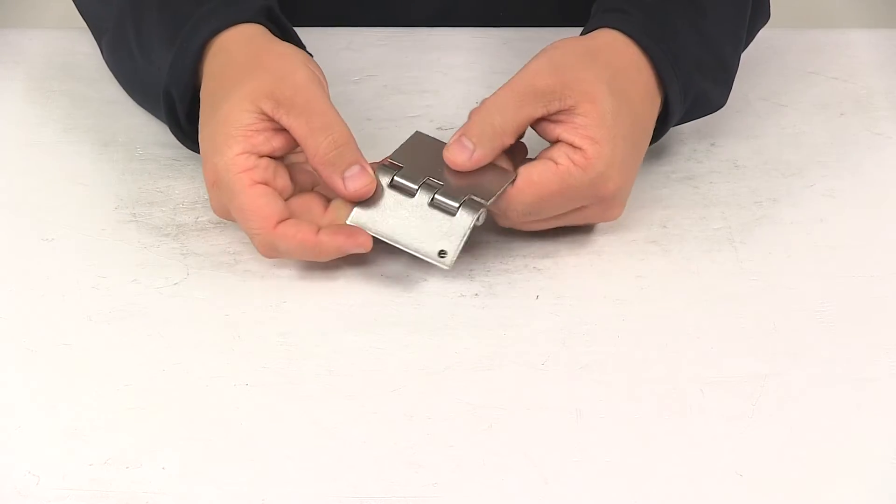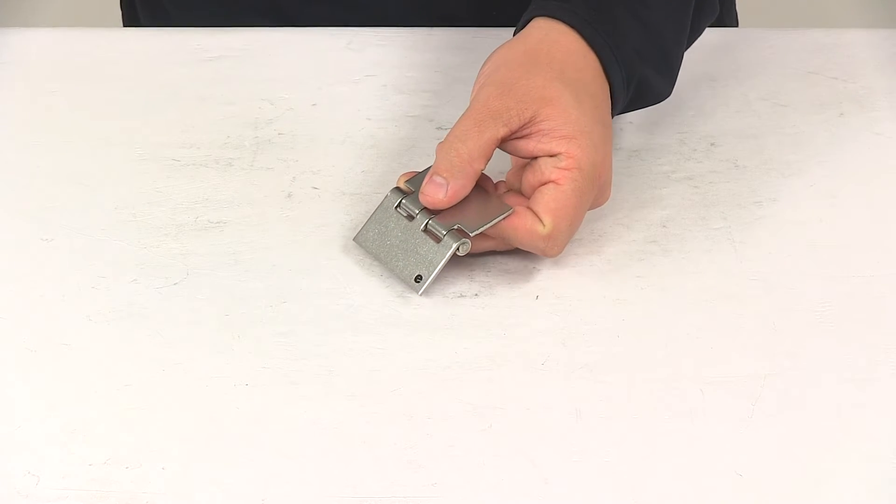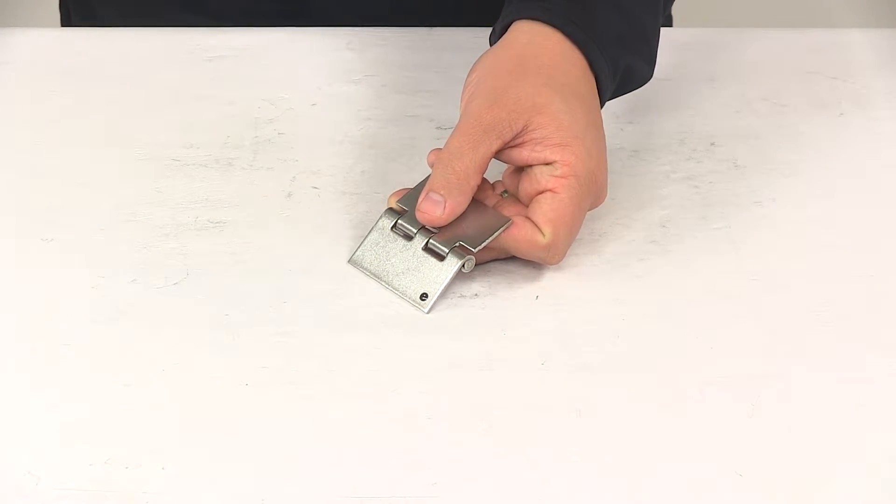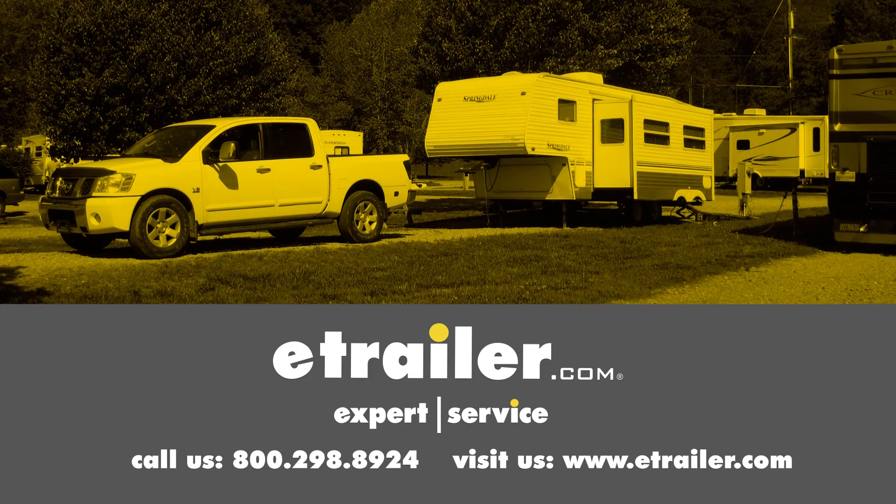That's going to do it for today's look at the panel lock five knuckle butt hinge. Click the link below to shop, learn more, or visit us at eTrailer.com.